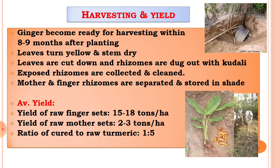After harvesting, the rhizomes are separated into mother rhizome and finger rhizome. The mother rhizome is used for planting and the finger rhizome is used for processing purpose. After separation, these sets are stored in shade.